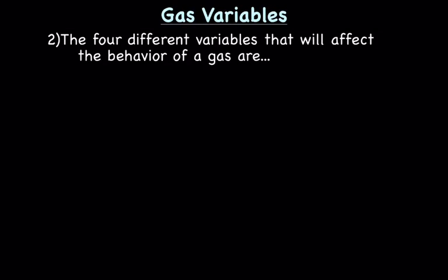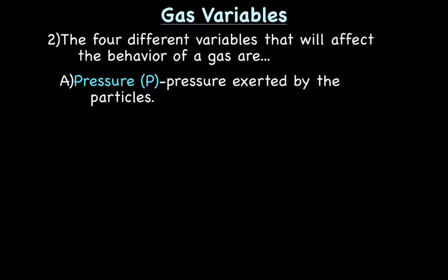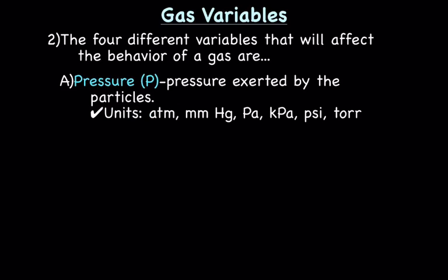The four different variables that will affect the behavior of a gas are: first, pressure, which we represent as a capital P — we're talking about pressure exerted by the particles. The units, which you do need to be familiar with, can be ATM or atmospheres, mmHg which is millimeters mercury, pascals, kilopascals, psi which is pounds per square inch, and torr.